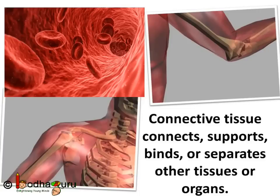So connective tissues connect, support, bind, or separate other tissues or organs. Bones also support other organs and tissues. For example, bones anchor the muscles and support the main organs.